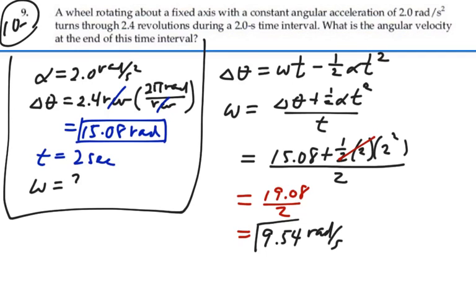So at the end of this time interval, we will have an angular speed of 9.54 radians per second. That's our answer.